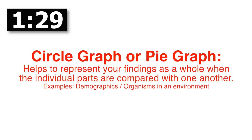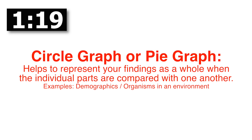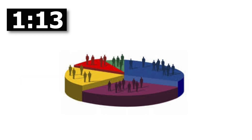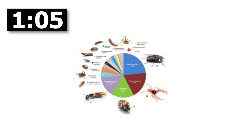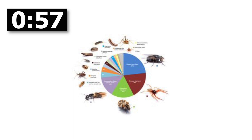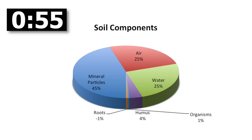Next is the circle graph, or pie graph, which shows how different parts of something relate to the whole. Good uses include demographics — showing different racial or cultural compositions — or looking at an environmental system to see which animal or plant species are present and how they compare. You could also use it to show what elements appear in a certain soil sample.